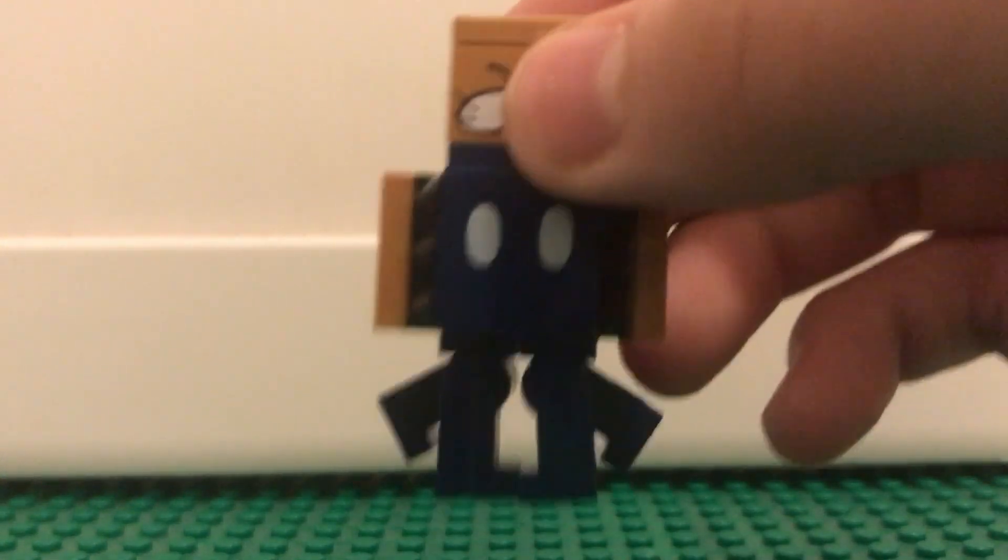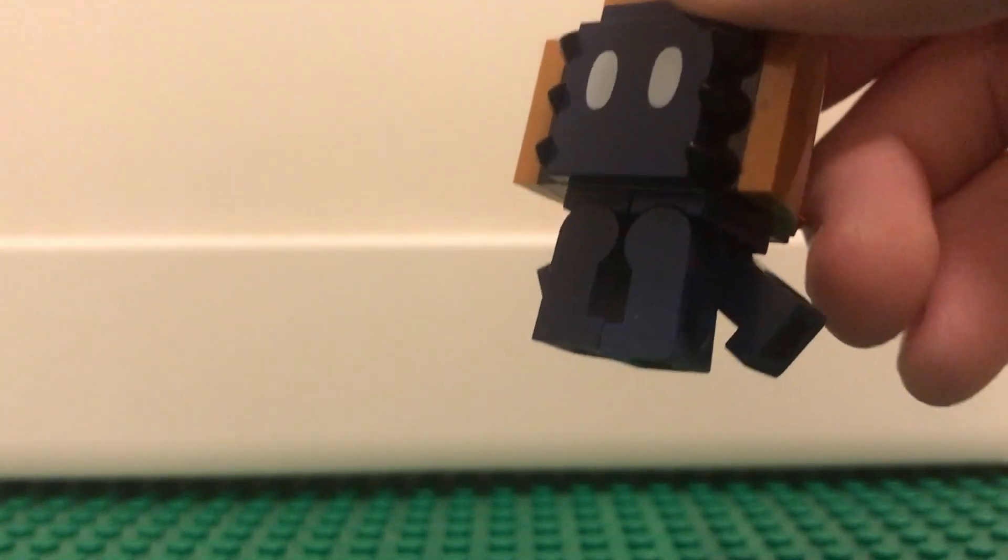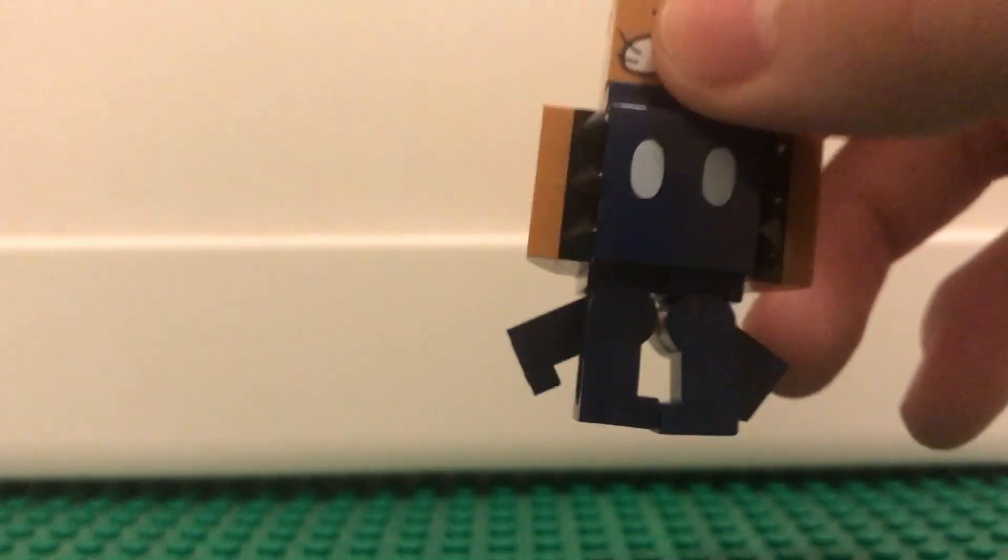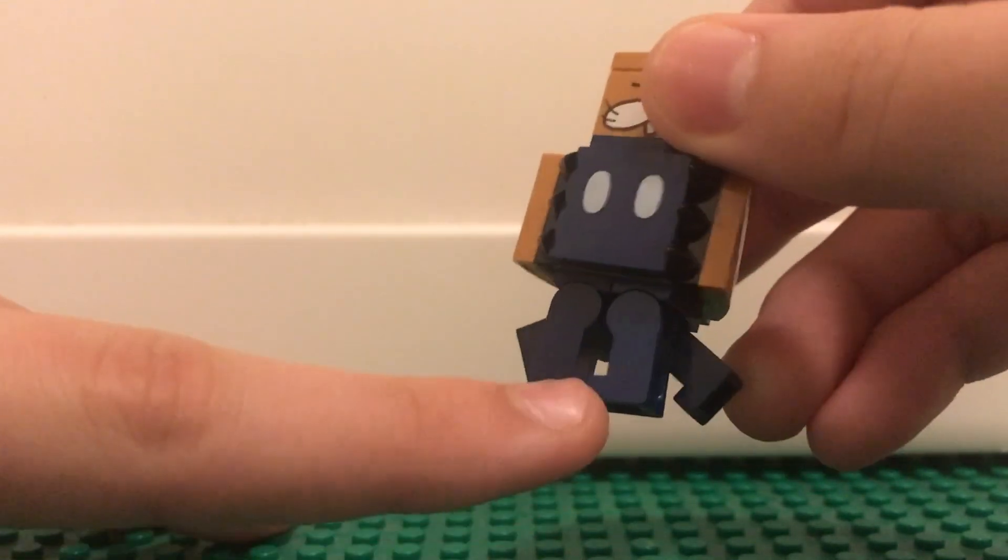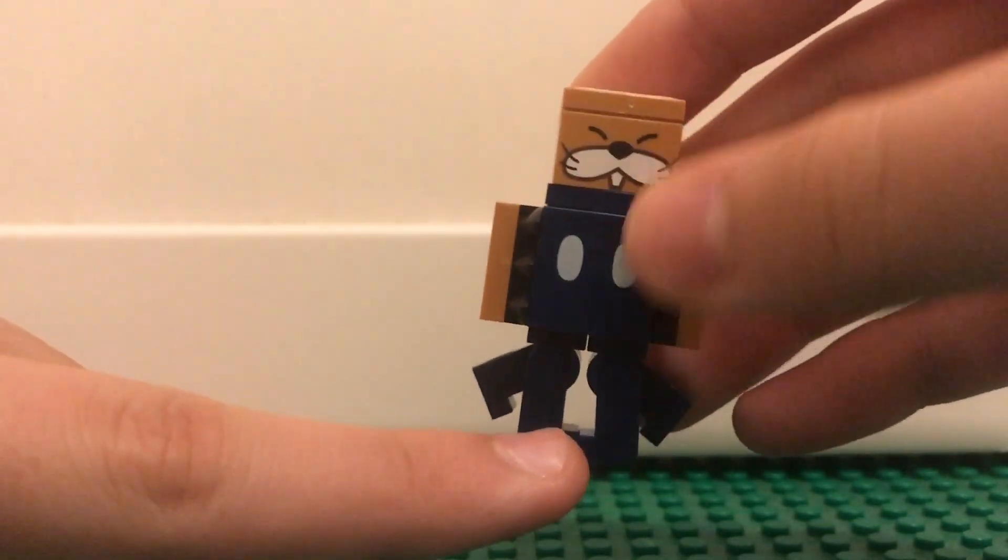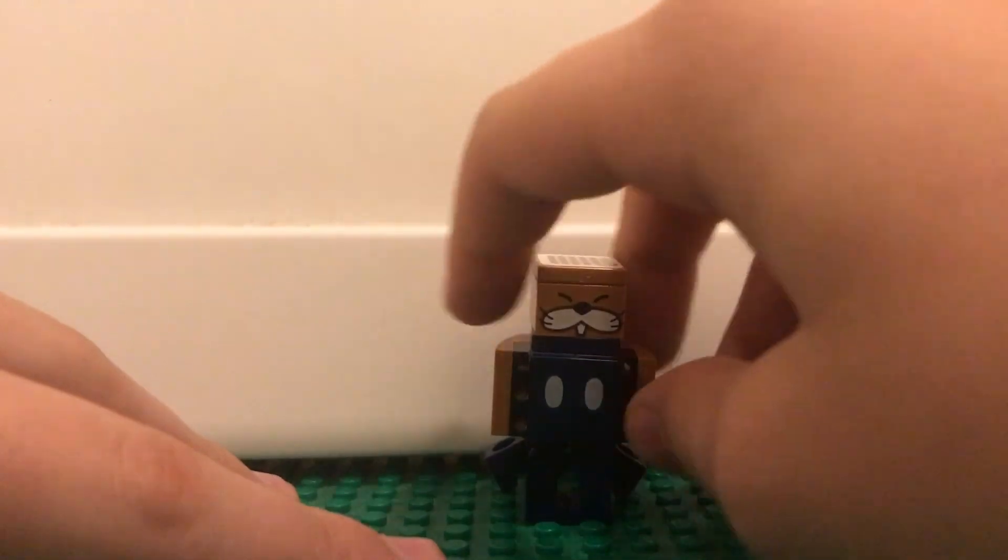But like this leg looks darker than the other one. Can you see that? Like, this is still navy blue. Is there like an older navy blue color that's darker than the new one? Let me know in the comments if there is. Because that's really weird looking. Also, you can stand him up just by putting the feet all the way together. It does look like a weird octopus.